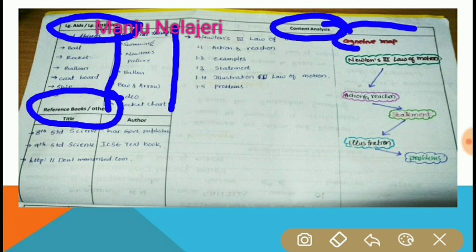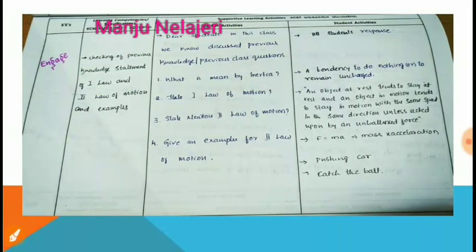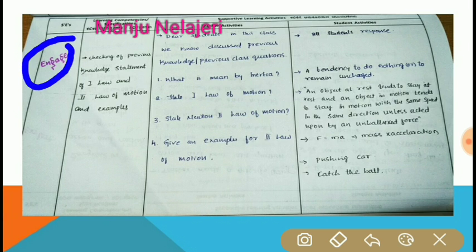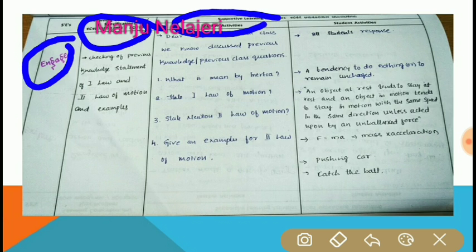In the middle portion, content analysis is very important. On the last right side, the cognitive map is written. In the PIES-based lesson plan, the first stage is Engage. In the Engage stage, learning competencies or learning specifications are written in the second part of the given paper, and in the middle portion the teacher activities are written — asking previous knowledge questions during the Engage time.